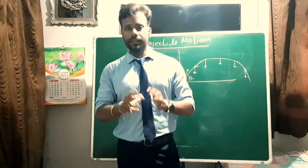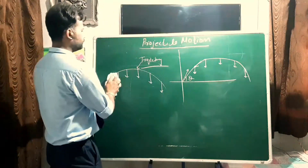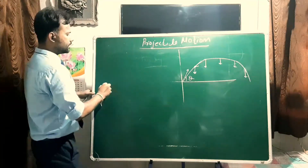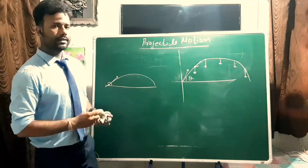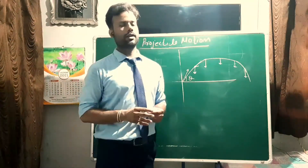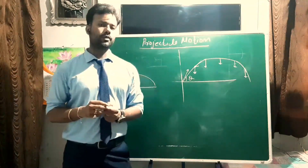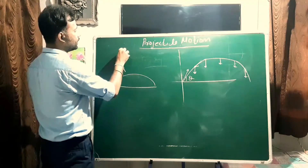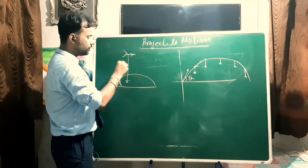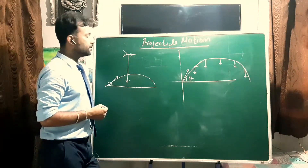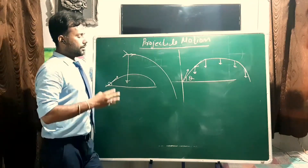There are many examples of projectile motion. If you kick a football on the horizontal plane, it follows a curved path — the football is the projectile. Similarly, if a fighter plane is moving and drops a bomb, the bomb does not fall straight down because the plane is moving. The bomb follows a curved path, which is also projectile motion.